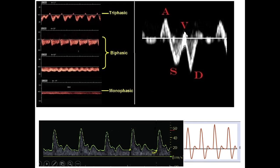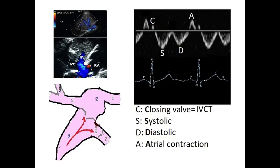You may or may not see the V wave — either way is normal. A normal hepatic vein Doppler has a W shape as shown, with a very obvious and clear pattern where the S wave is taller than the D wave. This S > D pattern with a prominent A wave is the normal hepatic vein Doppler.